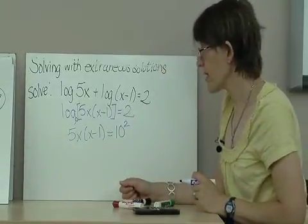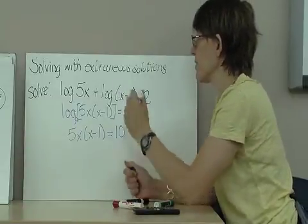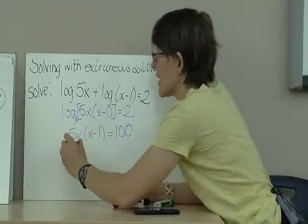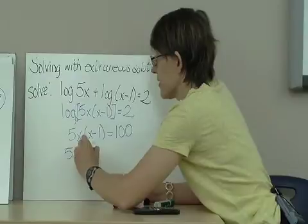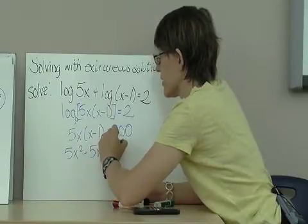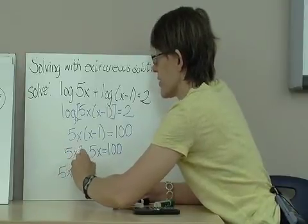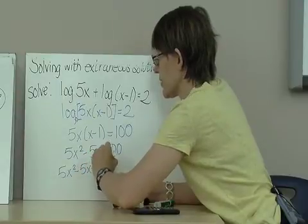Well, 10 squared is just equal to 100. So I'll replace that 10 squared with 100. And you see that I'm going to have a quadratic here.